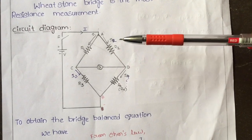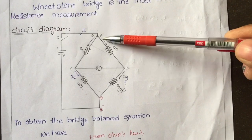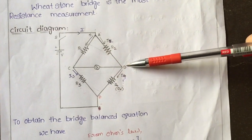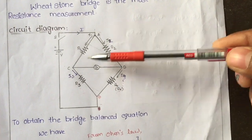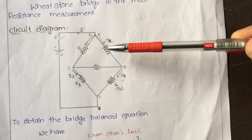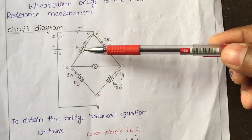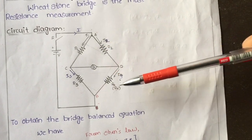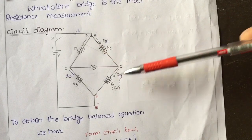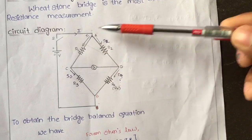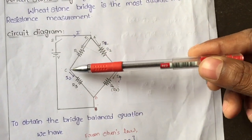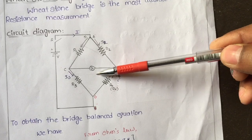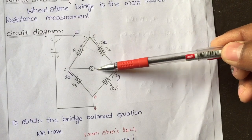The circuit has four branches A, B, C, D. Between each branch there are resistors: R1, R2, R3, and R4 are all connected in the bridge network. Between the C-D branch there is a galvanometer connected.